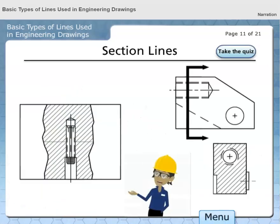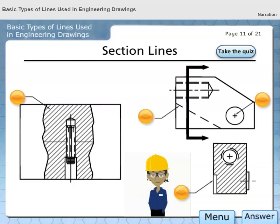Section lines are used to show where material has been cut away in a section view. A cutting plane line or break line may be used to expose the material. These lines are drawn using different patterns to designate various types of materials. Which one of these best represents a section line?